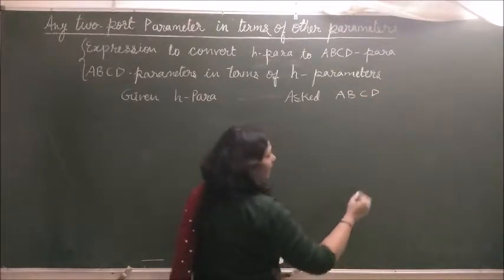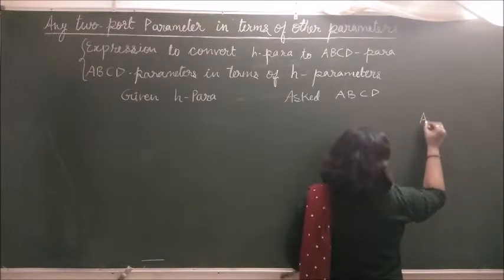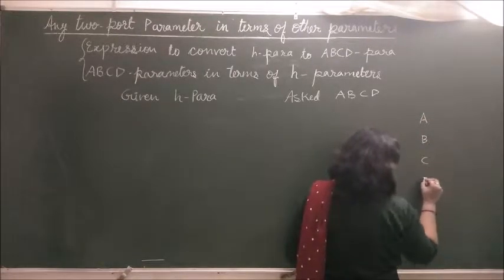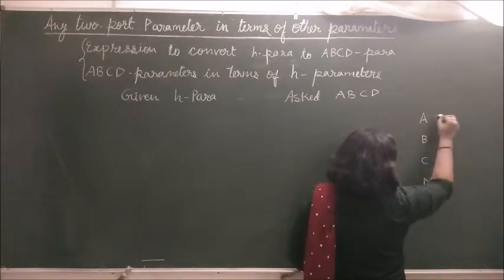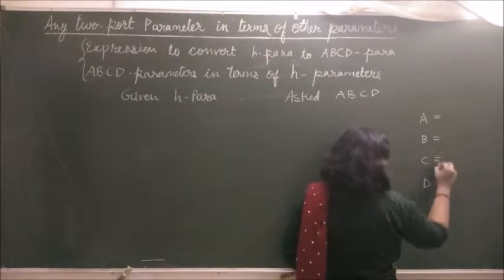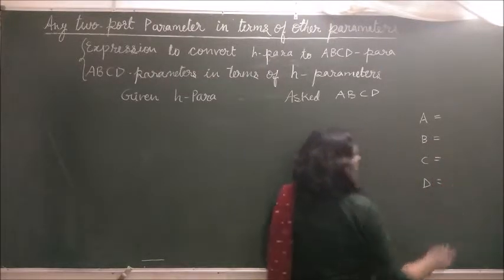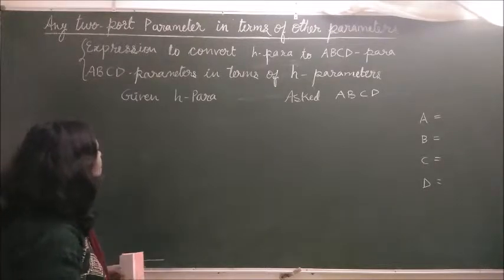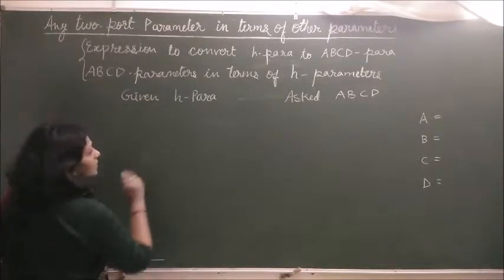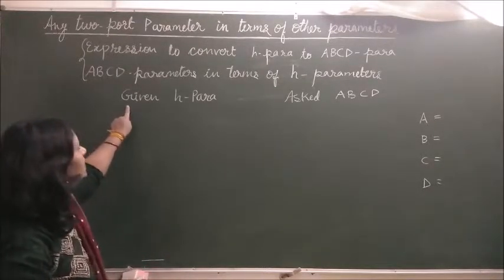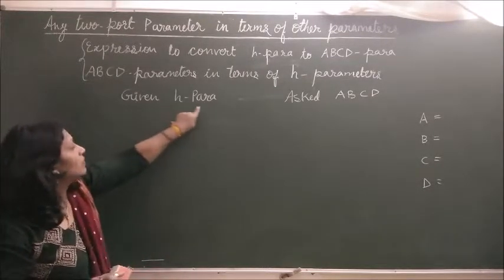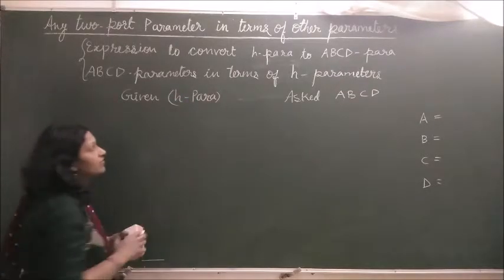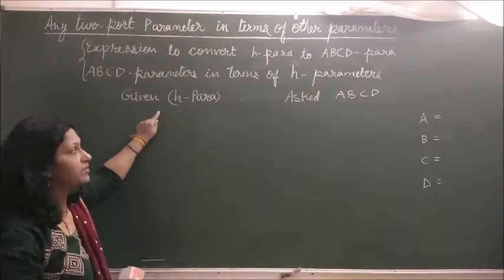Here we have to find the value of A, B, C, and D parameters in terms of H parameters — that is H11, H12, H21, H22. After deciding what is our given parameter, we will start working on it. We need not touch the ABCD parameter; we just write the equations of the given H parameters.